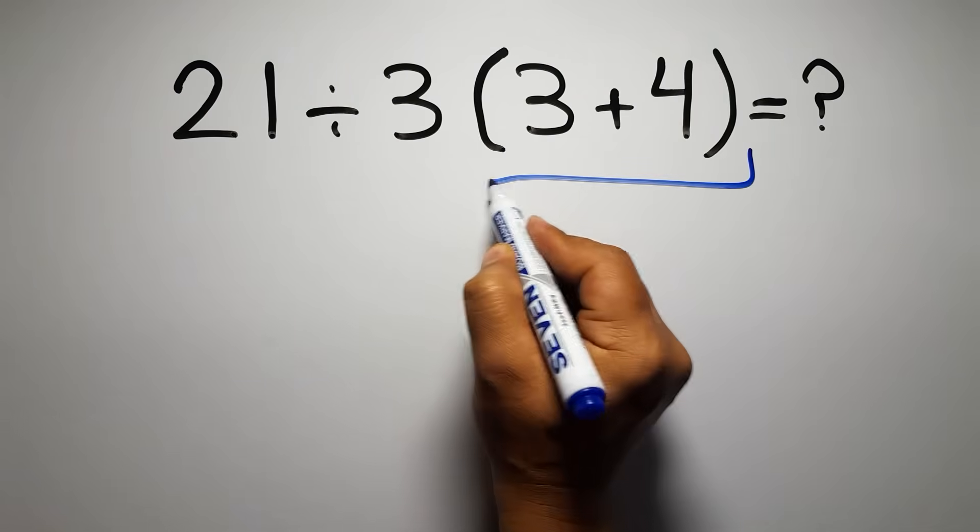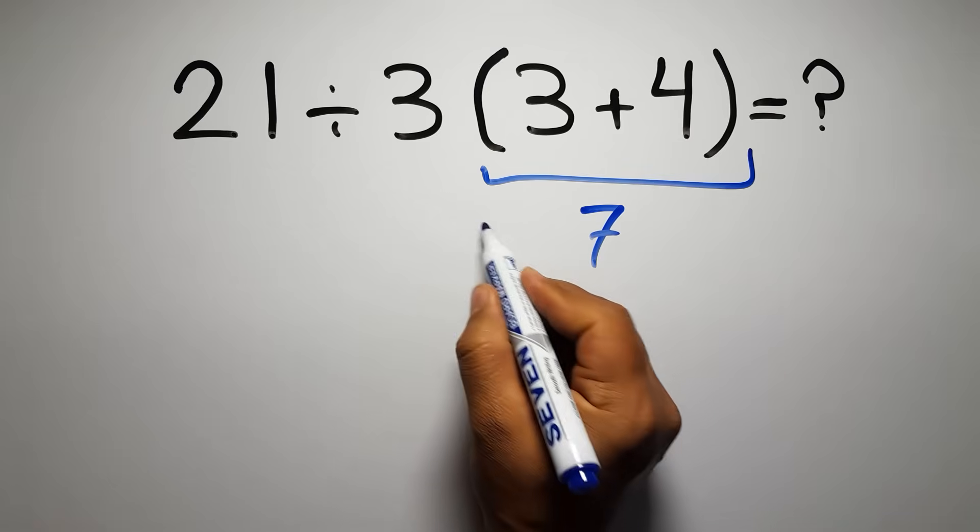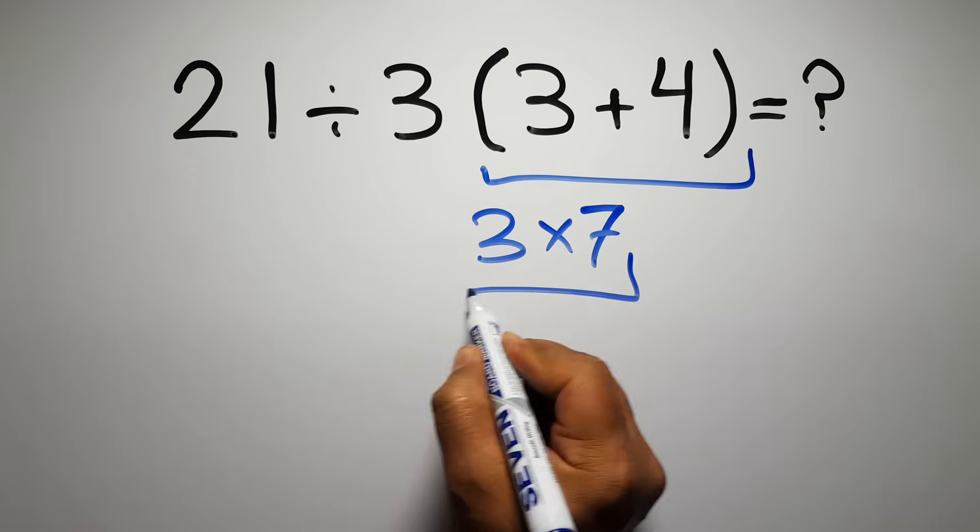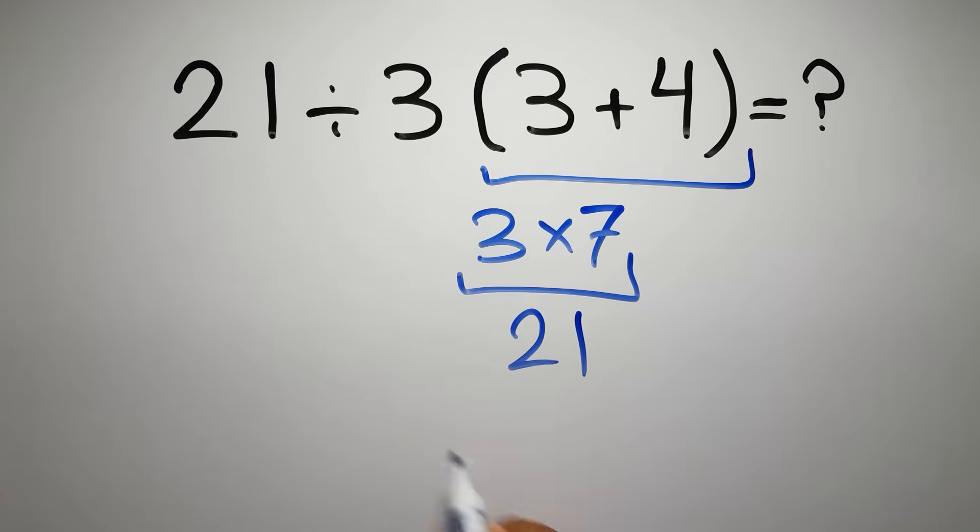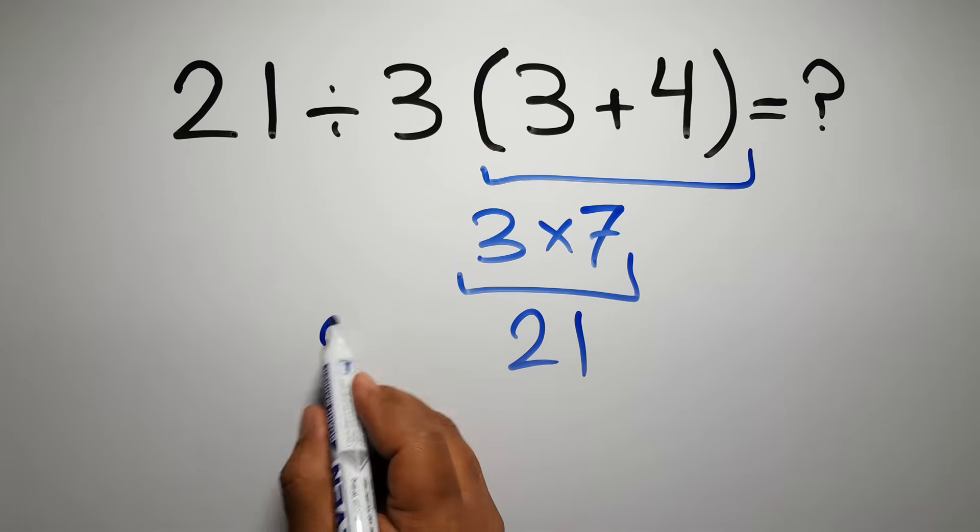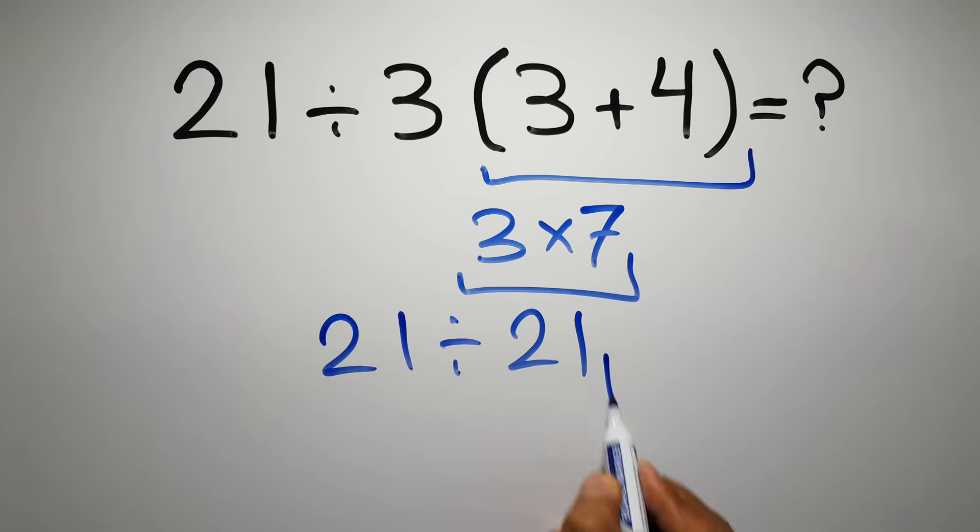3 plus 4 gives us 7, so 3 times 7 is just 21, and 21 divided by this 21 gives us 1. But this answer is not correct.